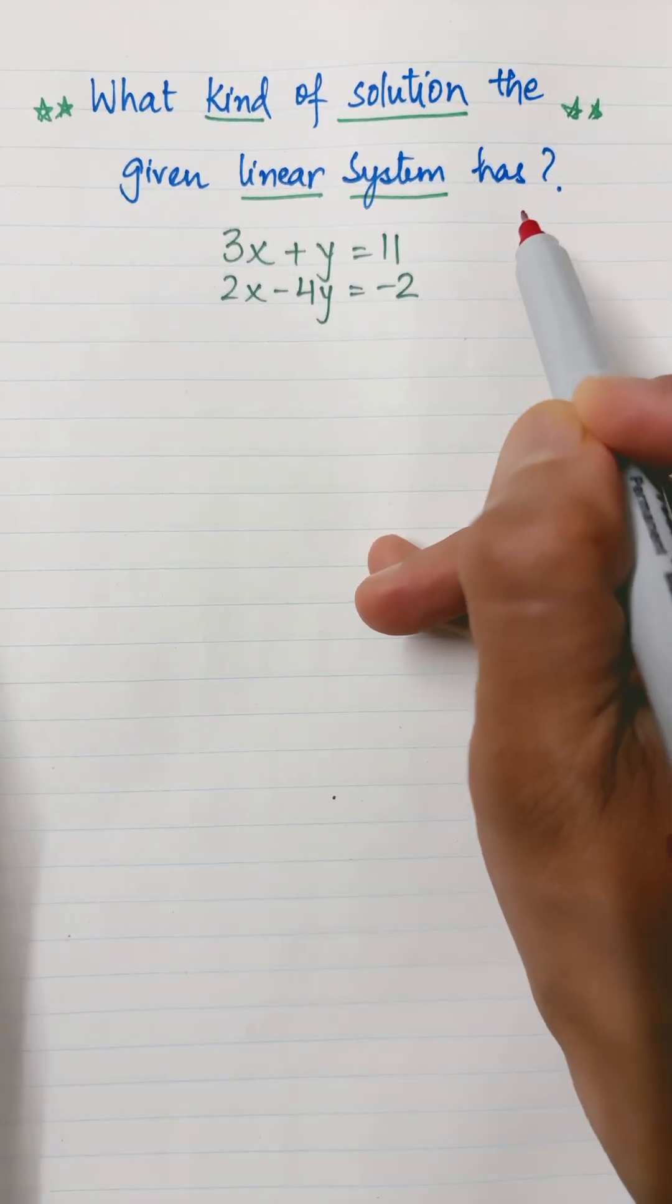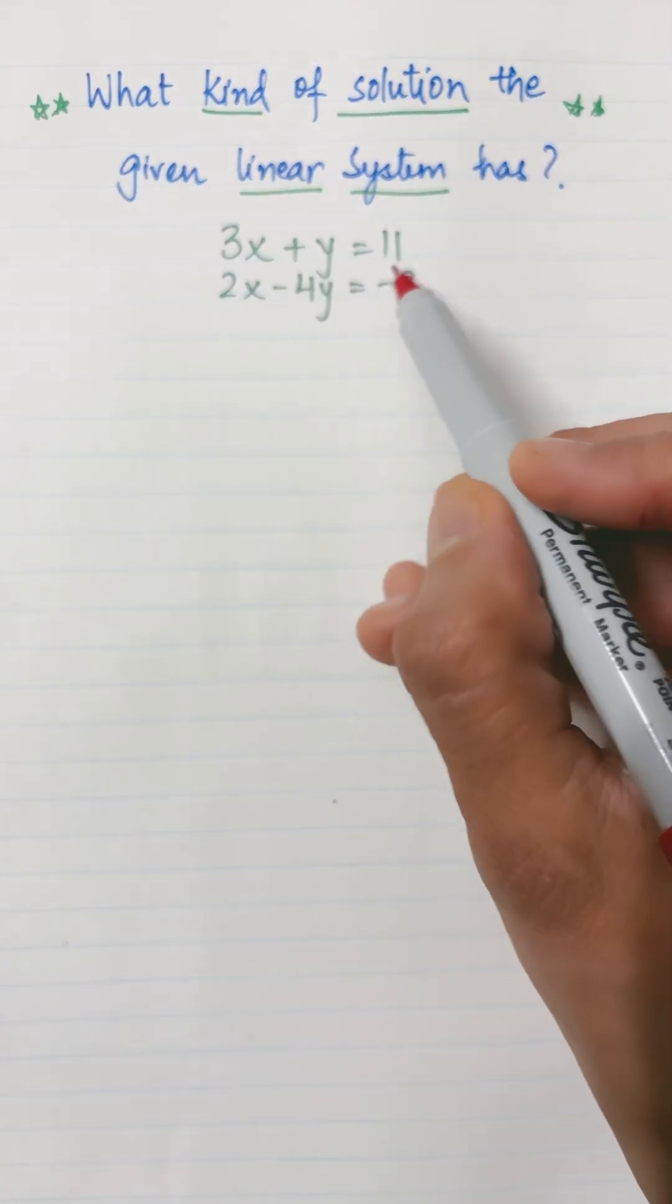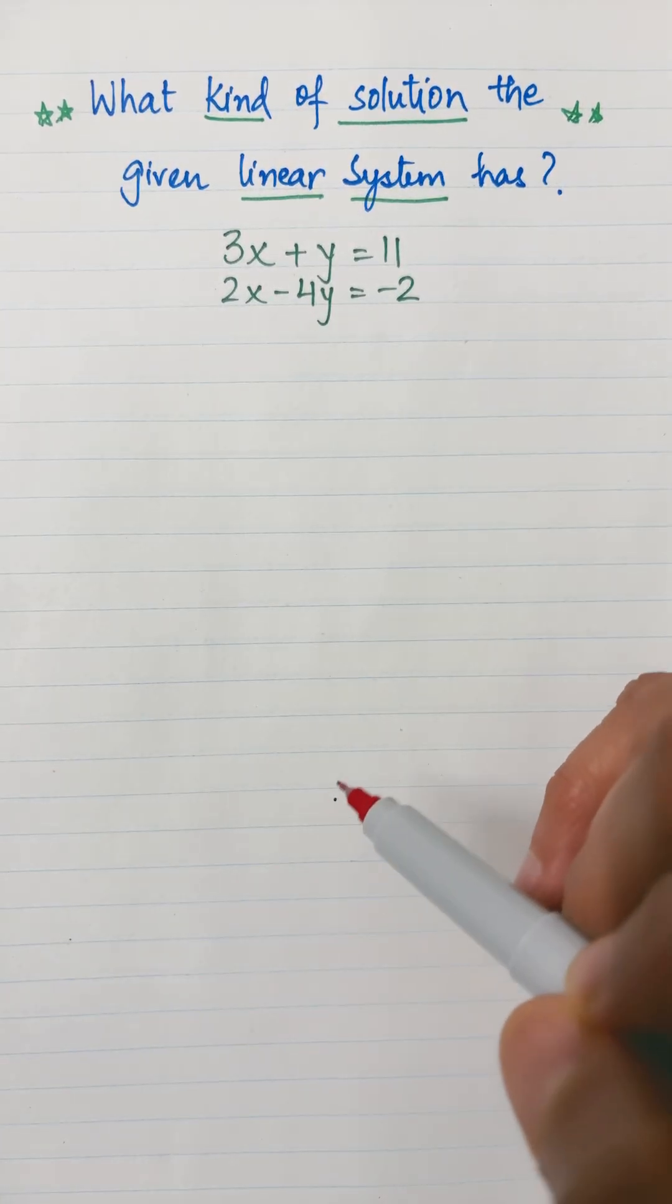What kind of solution does the given linear system have? The equations are 3x plus y equals 11, and 2x minus 4y equals minus 2.